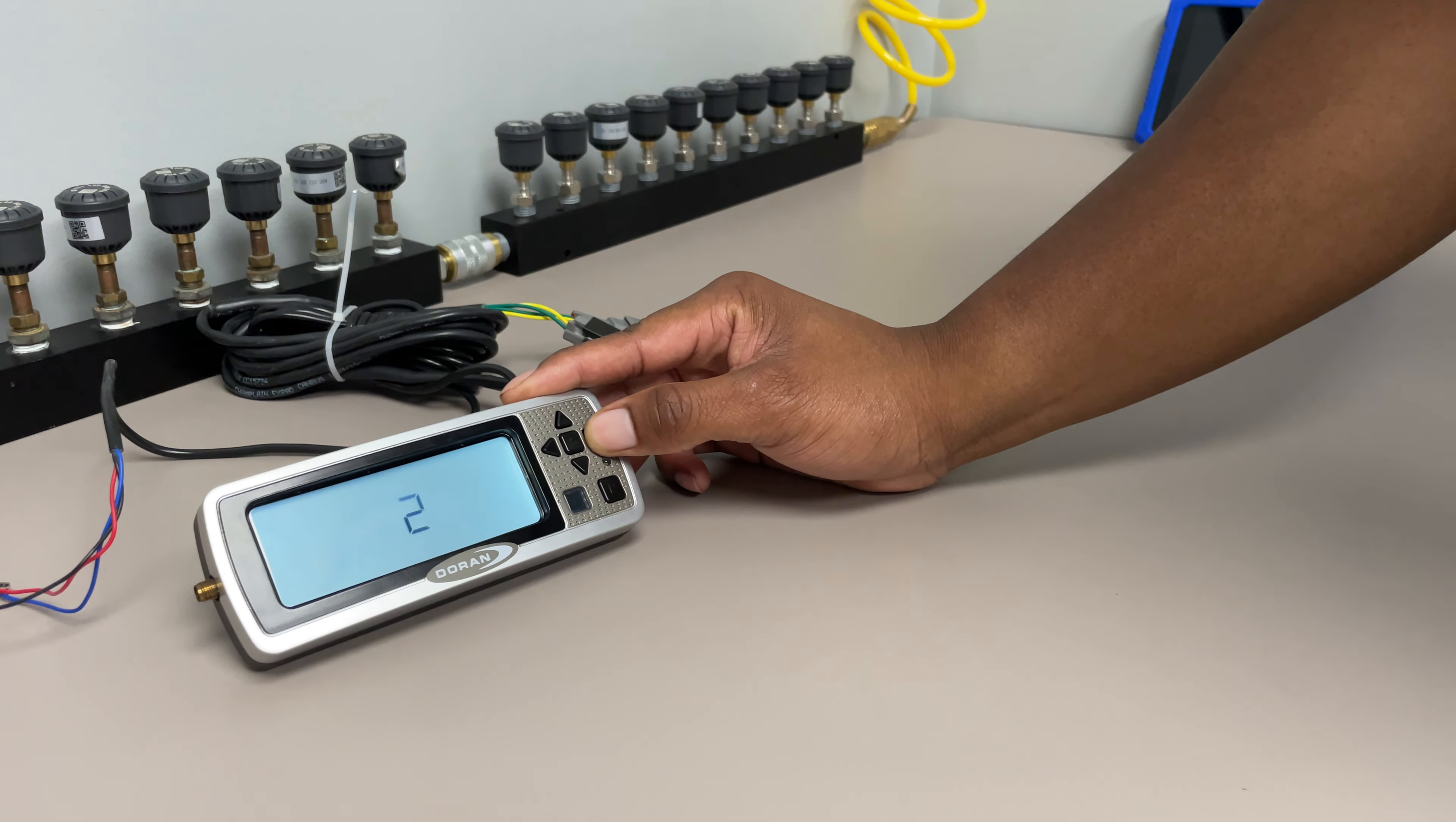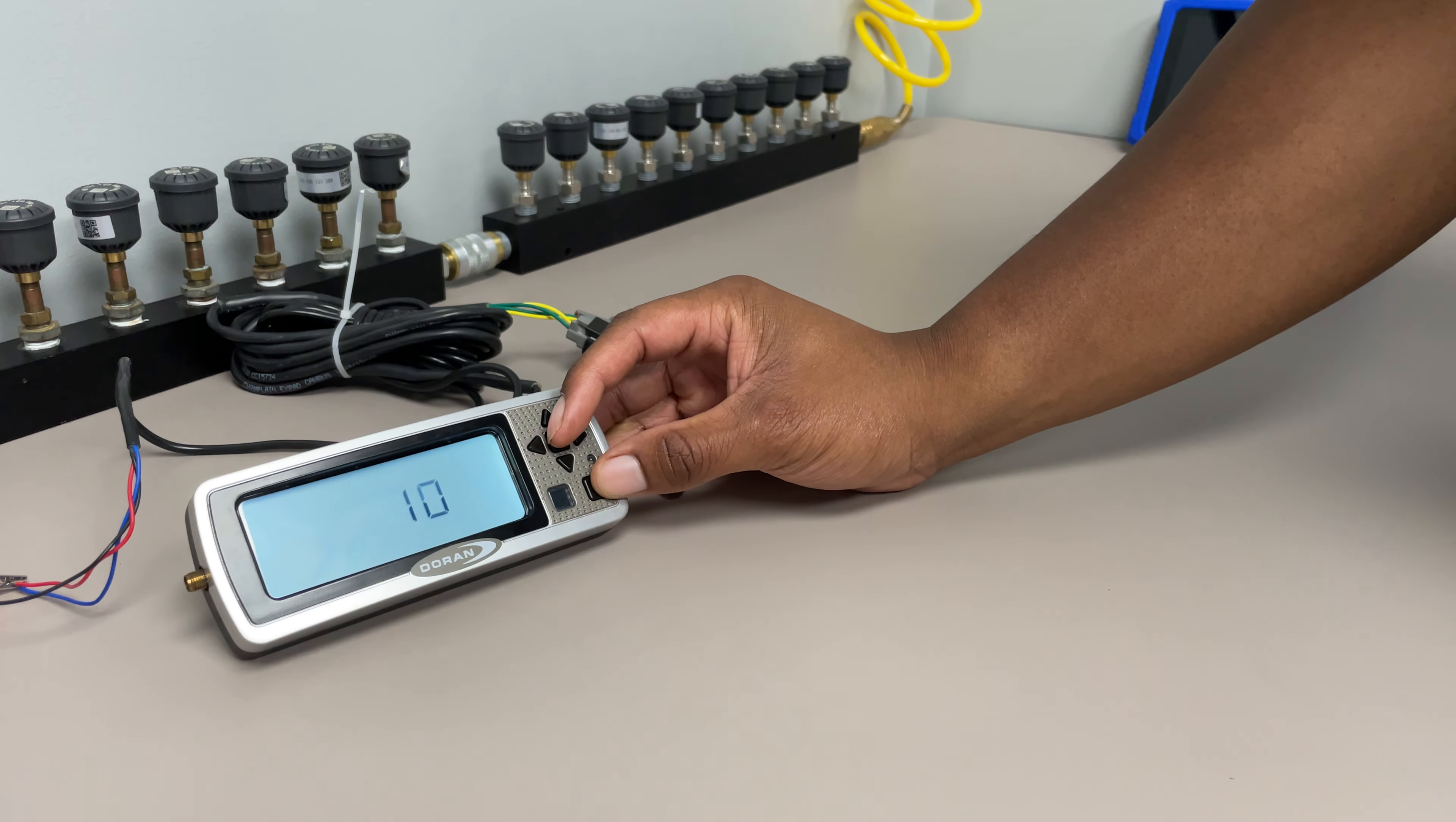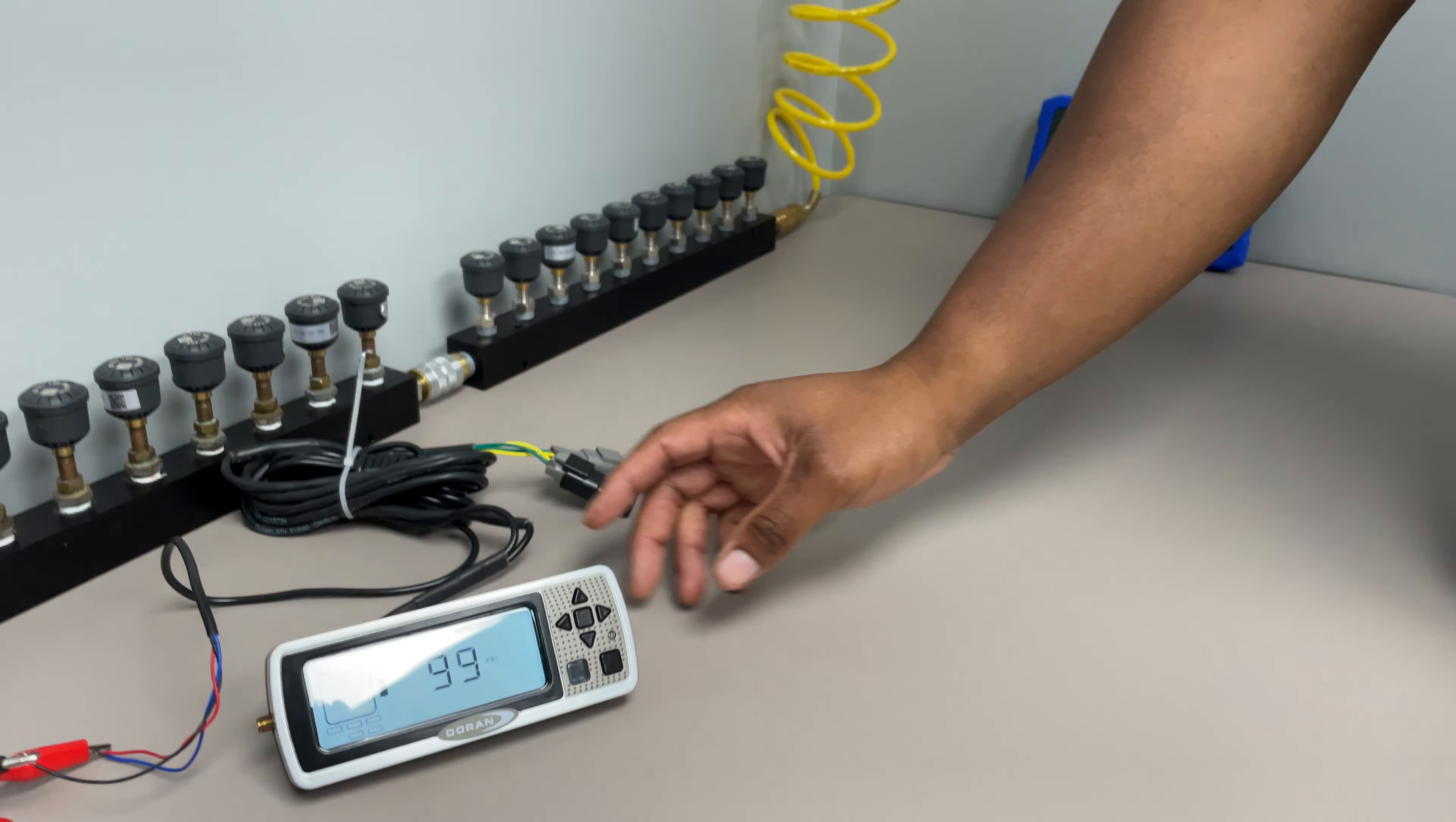You can use the right arrow key to scroll through the alarm fault codes. Then you can press the program and the set key to get you back out of that. So press and hold, got you back in normal operating mode. That's all I got for y'all today. Take care.